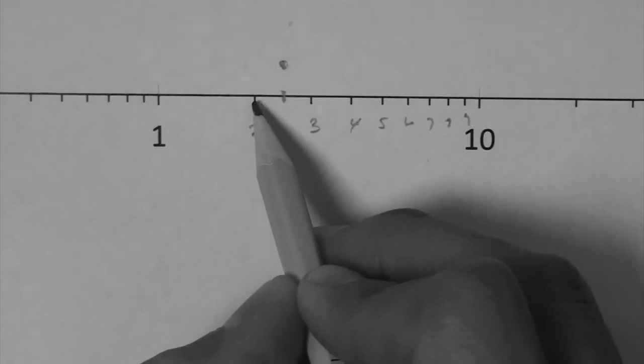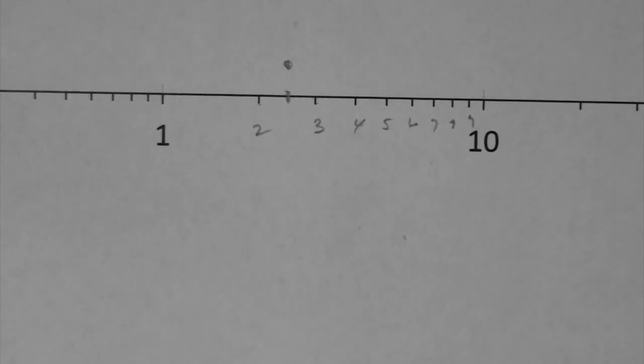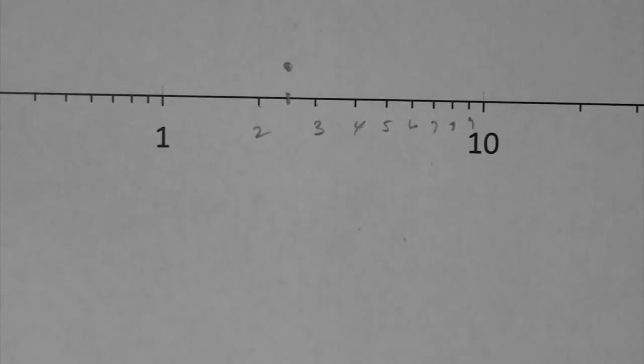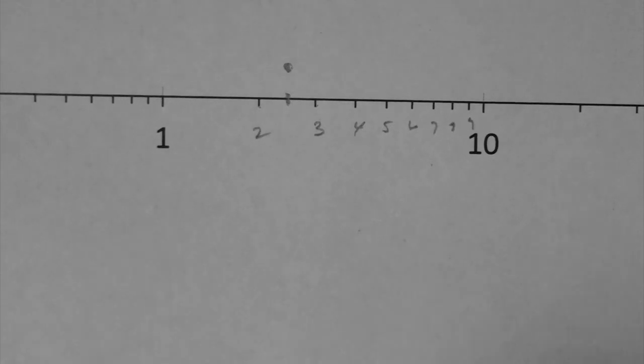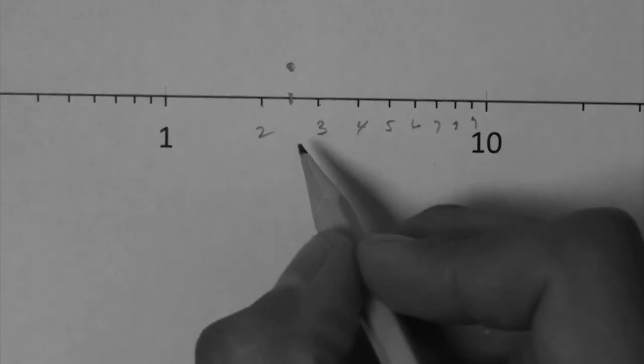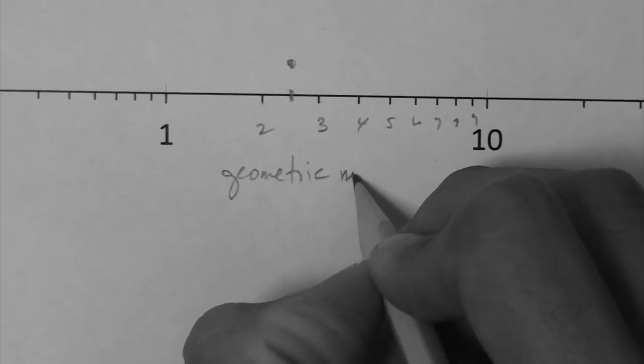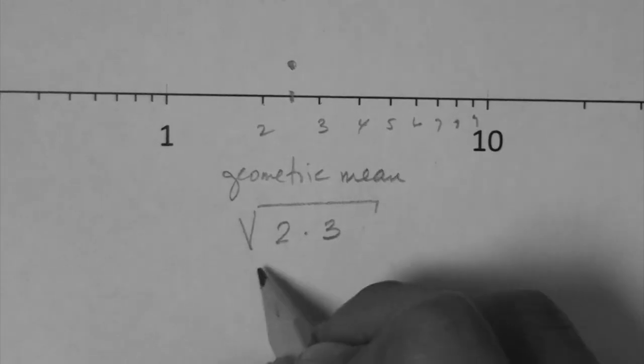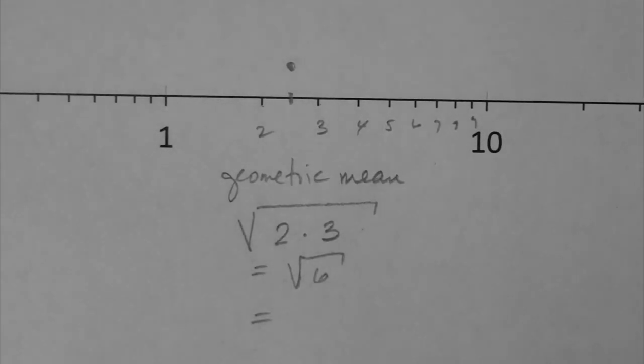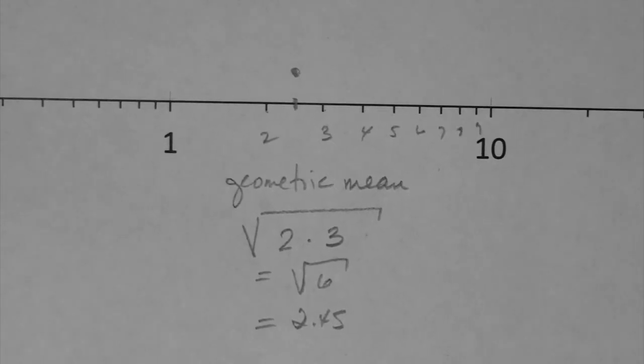Between any 2 tick marks in a log scale, there is another log scale. We have to use a little formula that is quite simple to determine values within 2 tick marks. This formula allows you to determine the value at the center, meaning halfway between 2 tick marks. But with that, you can proceed to get basically any value you want. Between 2 and 3, the formula is called the geometric mean. All it is is the following. Between 2 and 3, you square root 2 times 3. This is the square root of 6, which is 2.45. So in here, the middle value is 2.45 between 2 and 3.